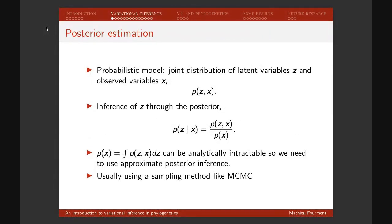A little bit of definitions: we work on a probabilistic model with the joint distribution of the latent variables Z and the observed variables X. We don't know Z, but we want to infer it through the posterior — that's just Bayes' rule. The big problem is that usually we can't calculate this because the normalizing constant, the evidence or marginal likelihood, is not tractable. So we need to use approximate posterior inference, and usually that's done using MCMC.